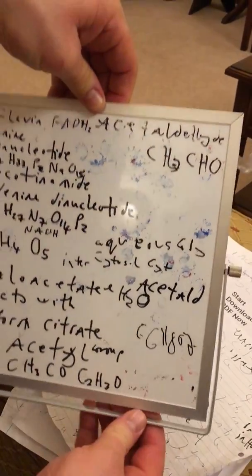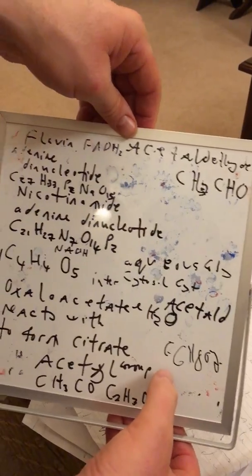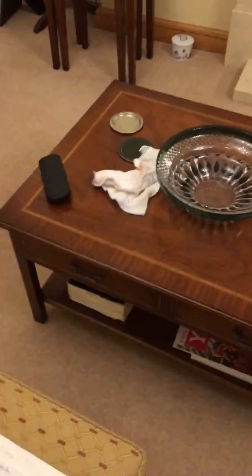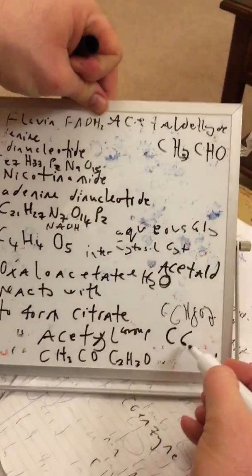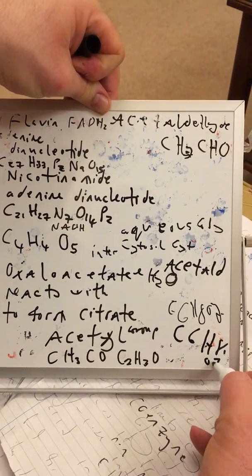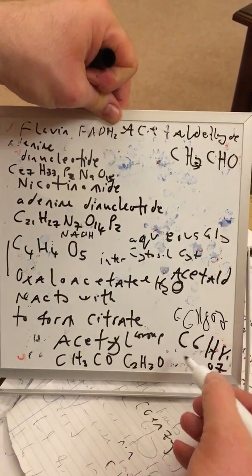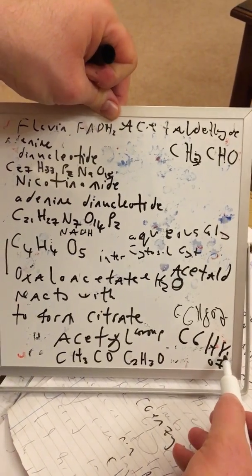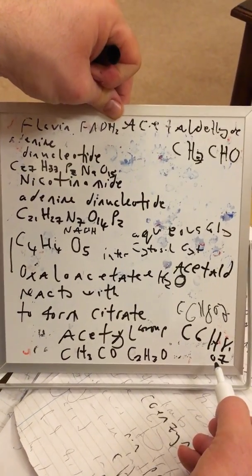And I've also put down citric acid. Well, citric acid, I haven't written it properly down. It's C6-H8-O7. That's citric acid. I haven't written it down. So it's six atoms of carbon, eight of hydrogen, seven of oxygen.